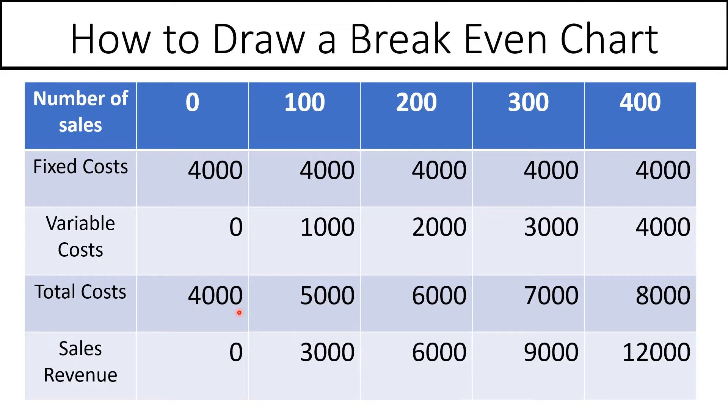And we just add those up to reach our total cost of £4,000 if they make none, £5,000 if they make 100, £6,000 for 200, etc. So we've worked out how much it costs them at each level of production.